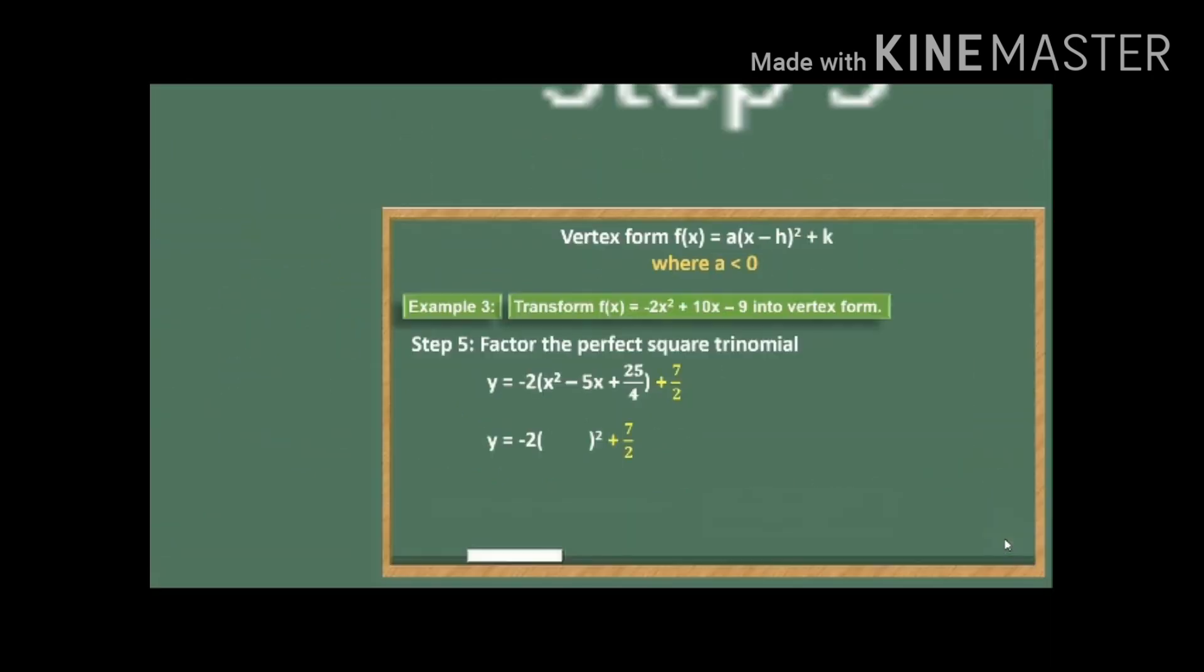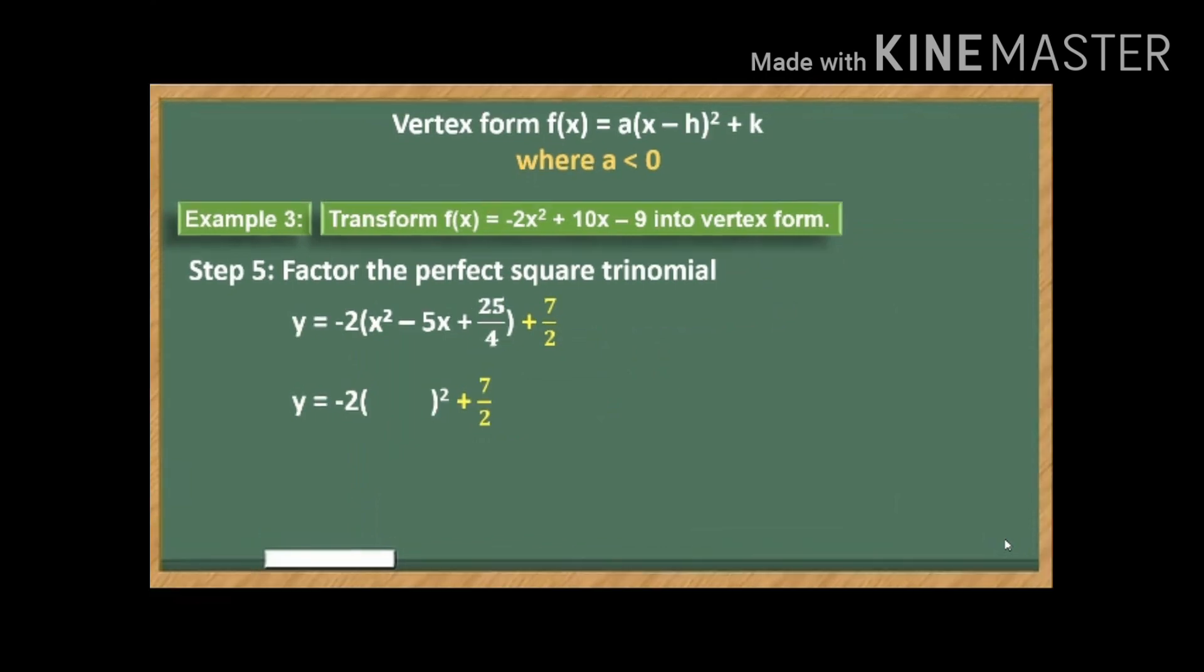And finally, our step 5. We're going to factor the perfect square trinomial. So this is a perfect square trinomial. Why? Because the quadratic term is, of course, a perfect square. And the constant term is also a perfect square. And the middle term is actually the product of...